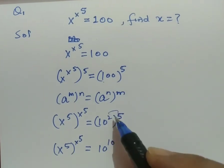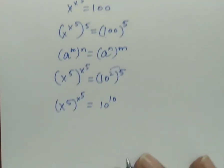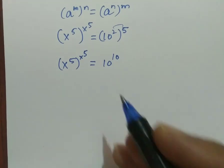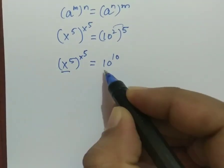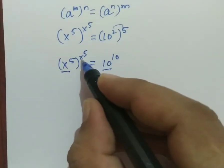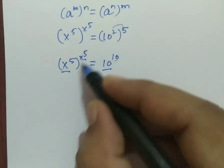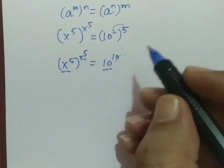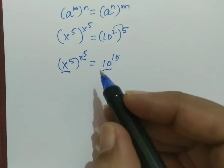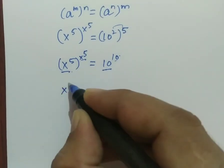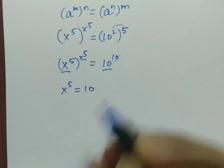These powers got multiplied. Therefore, their basis and exponents are the same. The exponent of this base is the same, so powers can be equated. So x raised to the power 5 equals 10.